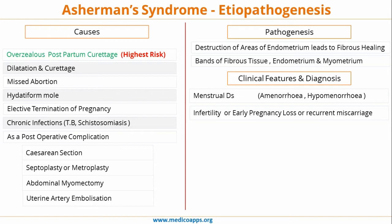Recurrent miscarriage is one of the most common presenting features of Asherman's syndrome. If pregnancy does occur, it is complicated and can involve placenta accreta, placenta previa, or even preterm delivery.